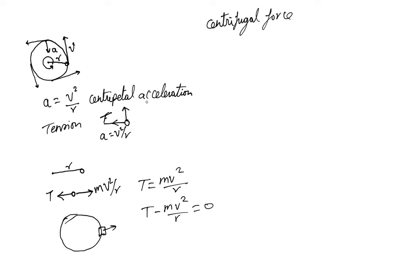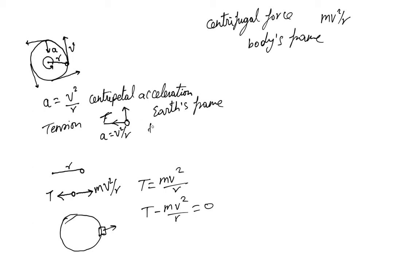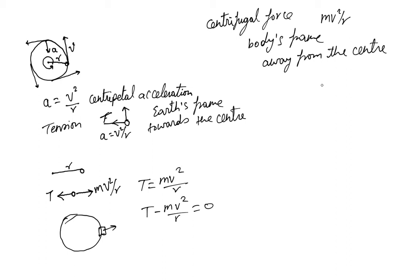This outward force is called the centrifugal force. Centripetal force is the term used when we are in the Earth's frame, while centrifugal force is the term used for the same magnitude force — mv squared over r — but when we are in the body's rotating frame. The centripetal acceleration acts towards the center, but the centrifugal force acts away from the center.